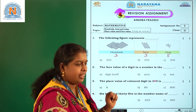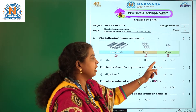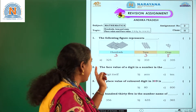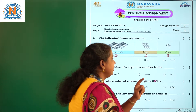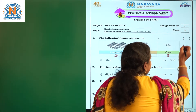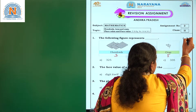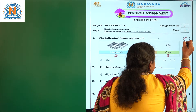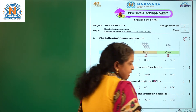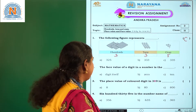In which option are you having the number 335? You are having this in the third option C, 335. So you have to write option C.